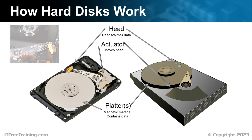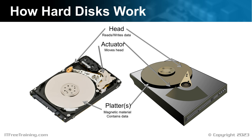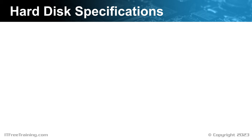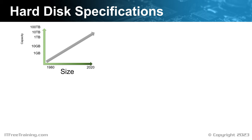Now that we have a basic idea of how a hard disk works, let's have a look at what to look for when selecting a hard disk. The first consideration is generally the size of the hard disk — the amount of data that can be stored. Hard disk capacity has been increasing over time. Back in the 90s, capacity was measured in megabytes. Nowadays, hard disks mostly start in the gigabytes. When this video was created, the largest hard disks on the market were over 20 terabytes, and it is estimated that one day we could have hard disks as large as 100 terabytes.